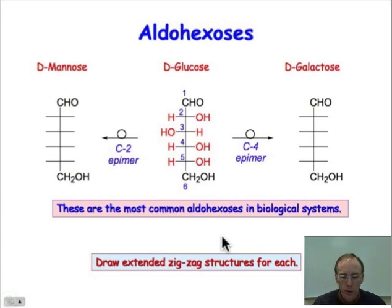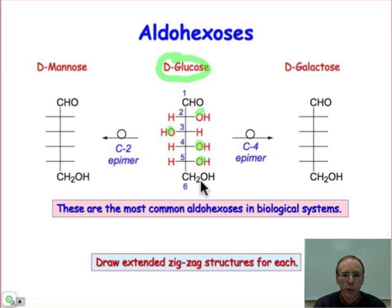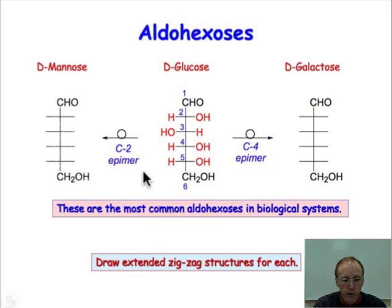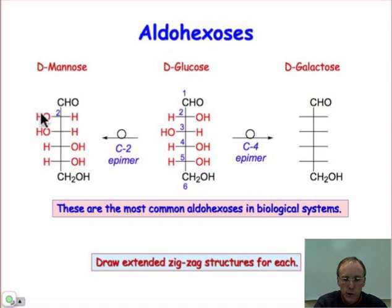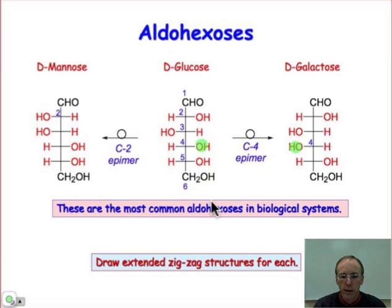The aldohexoses are some of the most important building blocks in biology, and D-glucose is a structure you may want to commit to memory. The pattern of hydroxyl group orientations starting from the bottom is right, right, left, right — that's the orientation of D-glucose. An epimer at C2 is D-mannose, an important sugar in biology — we've changed the hydroxyl group at C2 from the right-hand side in D-glucose to the left-hand side. D-galactose, another important biological sugar, is an epimer at C4, so the hydroxyl group is on the left-hand side in D-galactose, whereas it was on the right-hand side in D-glucose.